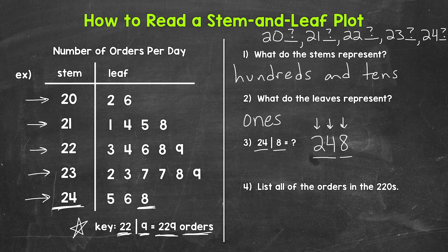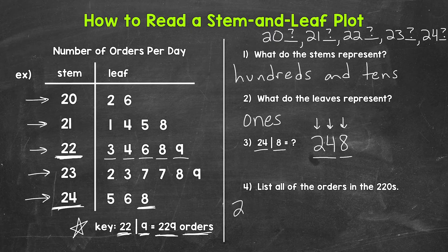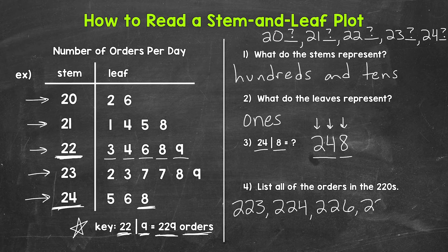Lastly, let's move on to number four: list all of the orders in the 220s. We need to look at the stem of 22 and put that together with the leaf of three, the leaf of four, the leaf of six, the leaf of eight, and the leaf of nine. So we have 223 orders, 224 orders, 226 orders, 228 orders, and 229 orders. Those are all of the orders in the 220s.